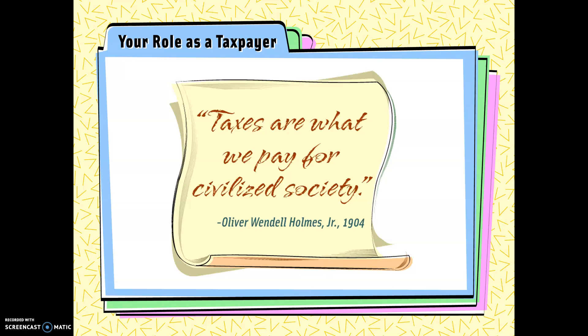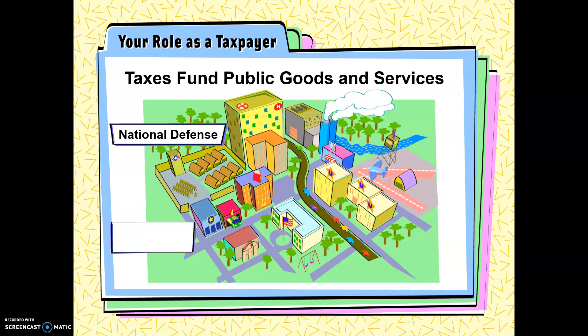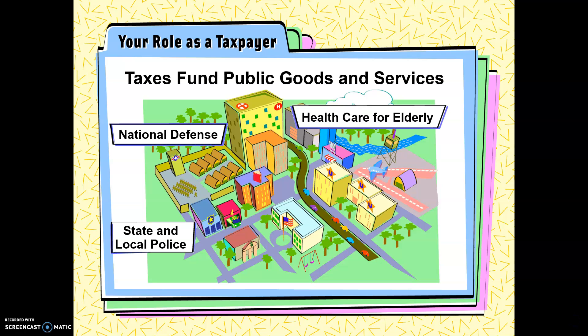Let's transition to taxes. Oliver Wendell Holmes said: 'Taxes are what we pay for civilized society.' They pay for a good portion of the goods and services you enjoy — from national defense to first responders, health care not only for the elderly but for some of you who receive government health care, and of course public education.